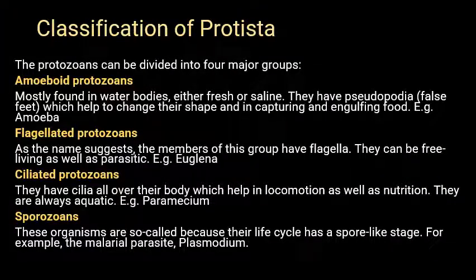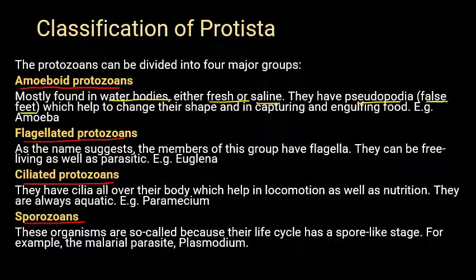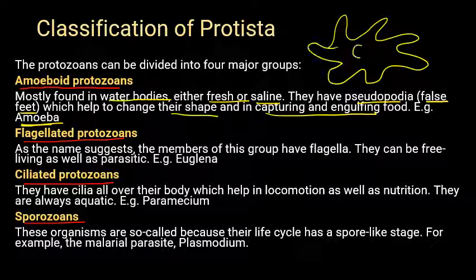Coming to the classification of Protista: they are classified as amoeboid protozoans, flagellated protozoans, ciliated protozoans, and sporozoans. Amoeboid protozoans are found in water bodies — either fresh or saline. They have pseudopodia — false feet — which help them change shape and capture food by engulfing it. Example: amoeba.